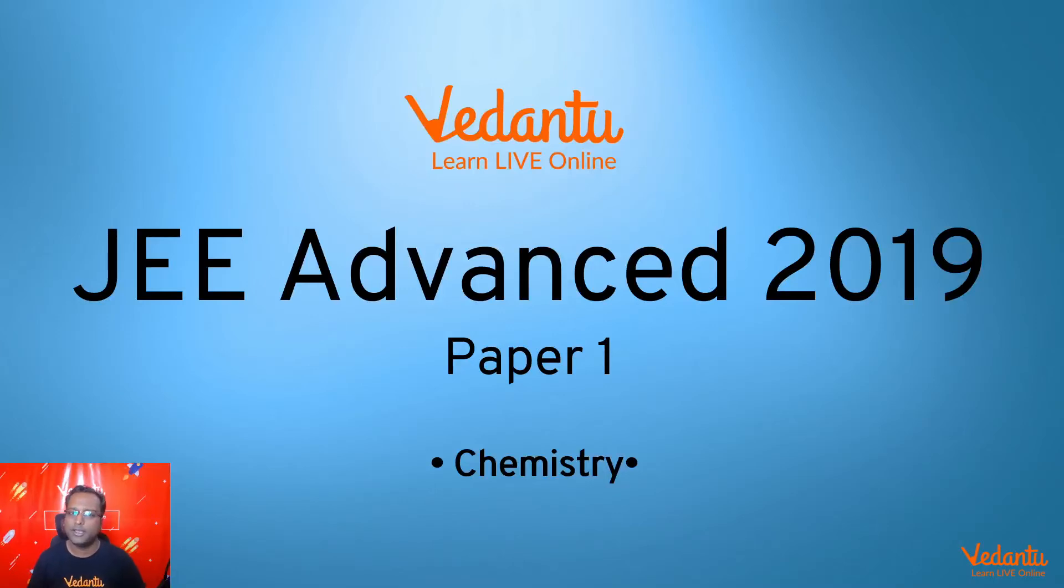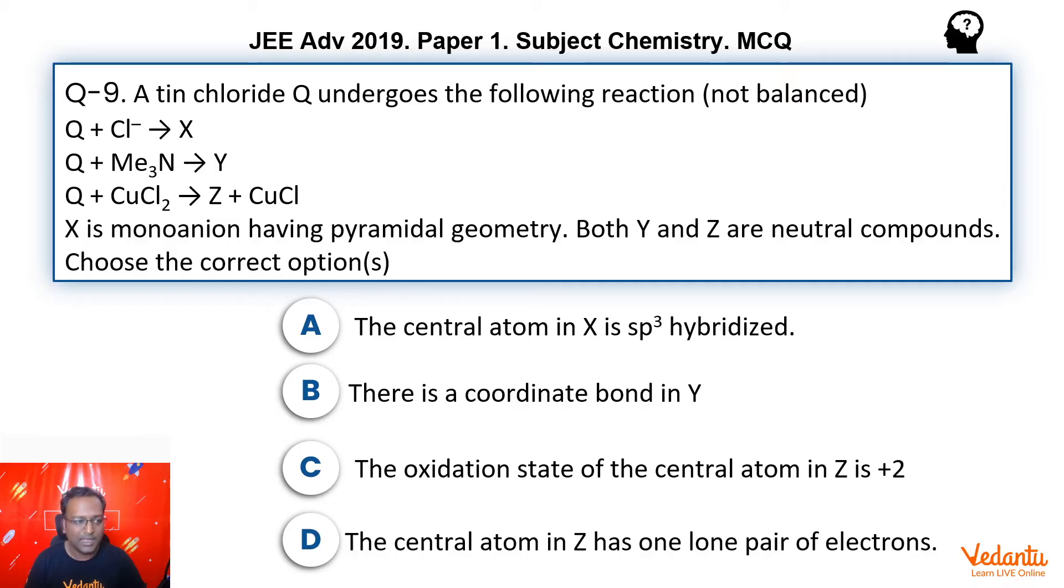Hi guys, my name is Shubhangar Odiya, Chemistry Master Teacher at Vedantu. Today we are going to talk about JEE Advanced 2019, Paper 1, question number 9. This is a multi-correct type question. Let's see what the question says.